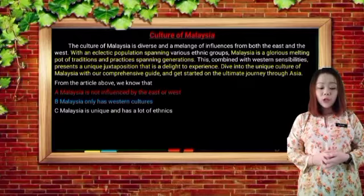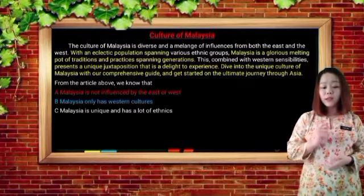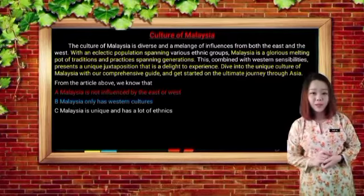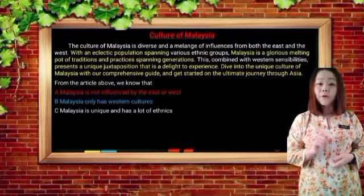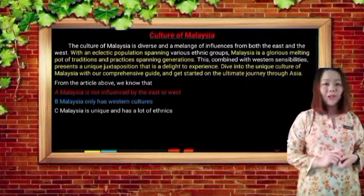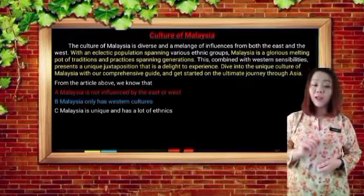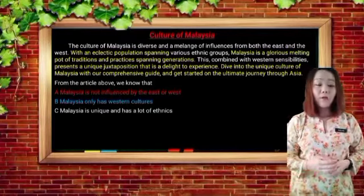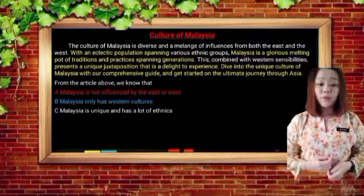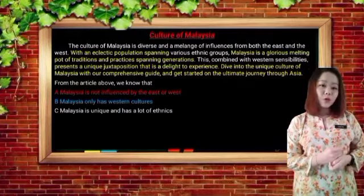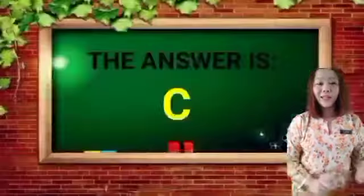For option B: Malaysia only has Western cultures. However, the text states this is combined with Western sensibilities, showing that Malaysia has a combination of Eastern and Western cultures. So option B is incorrect. Option C states Malaysia is unique and has a lot of ethnic groups. From the text, with an eclectic population spanning various ethnic groups, it shows Malaysia has many ethnic groups. Therefore, the correct answer is C.